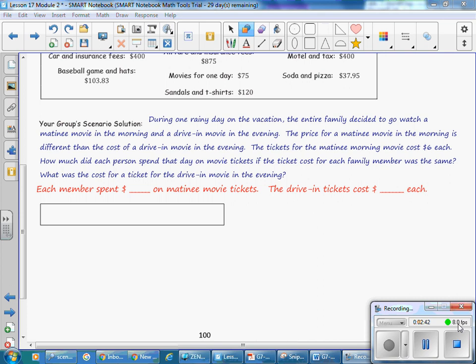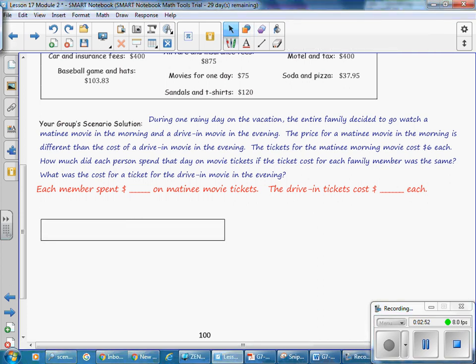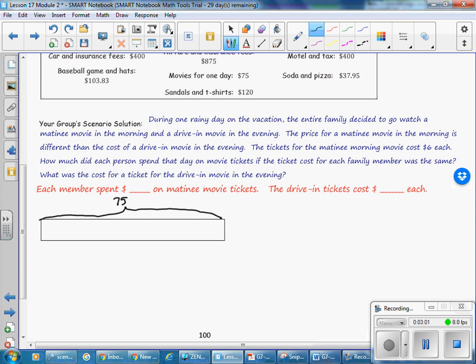Now we know that there are five people attending and they paid $6 each and they paid $75 total for the movie. So let's go ahead and label our bar. We know that the total is $75. And we know that that $75 paid for the matinee and for the evening movie. So we'll split that up and the section on the left here will be for the matinee. And the other section will be for the drive-in movie.